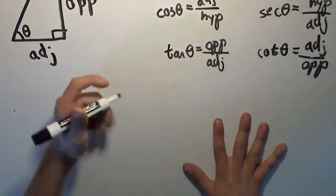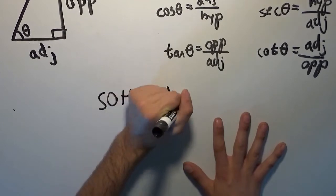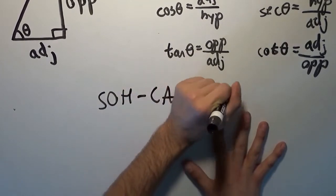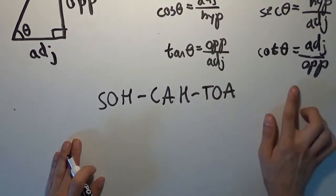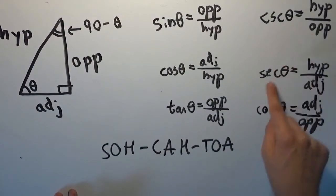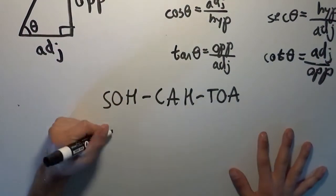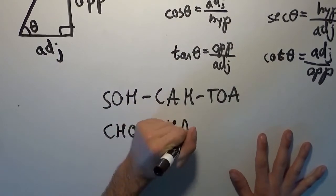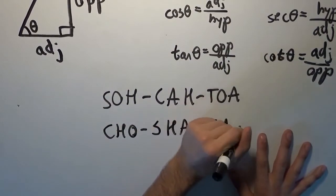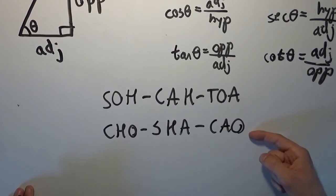So we're going to do our mnemonic here, SOH-CAH-TOA, and that is SOH-CAH-TOA. So that's the definitions here. And there's one for these. It's a little sillier. CHO-SHA-CAO. CHO-SHA-CAO. It's a little silly, but if you like mnemonics, there are your two mnemonics for the regular trig, and the reciprocal trig. You can see that it's kind of reciprocal. All the letters are flipped, kind of.